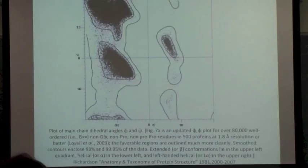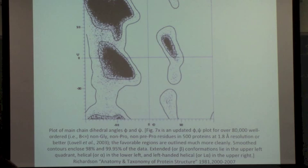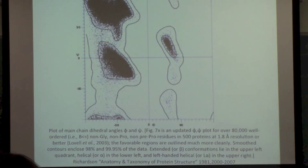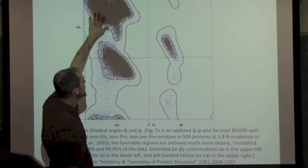If you plot phi versus psi and you exclude all of these regions where things bump into each other, you end up with three big regions of space. This region down here around phi minus 60, psi minus 60, which you all know is alpha helices. This region up here is beta sheets - positive psi's, negative phi's. Here's actual data of main chain dihedrals from high resolution protein structures.